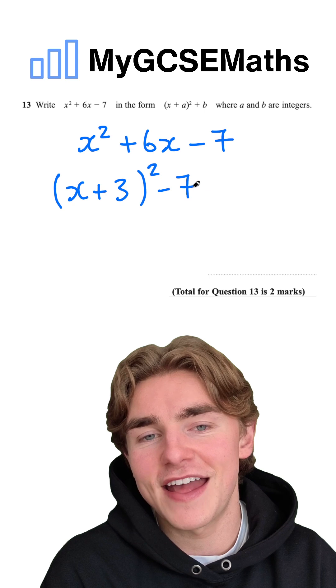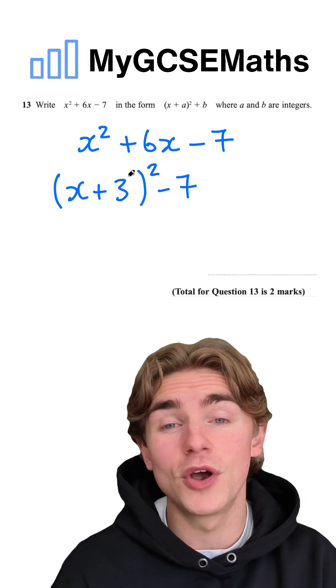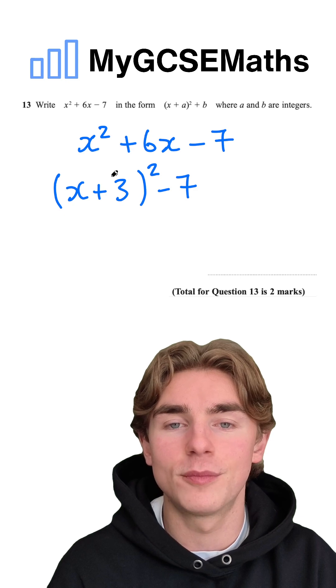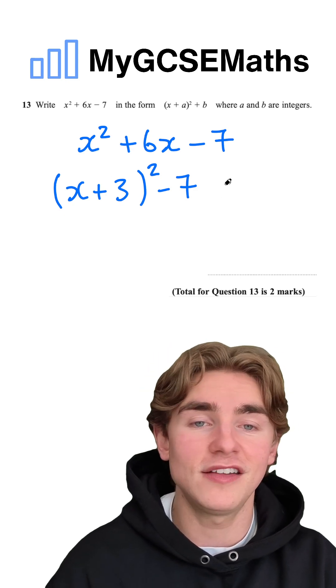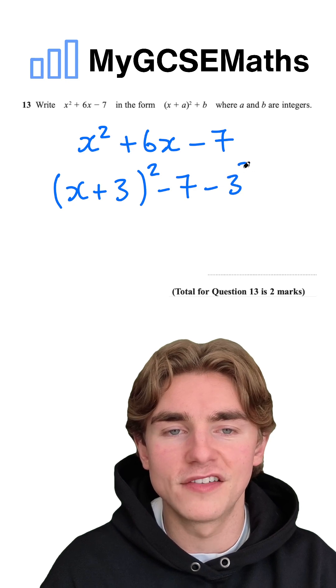We're going to copy down that minus 7 and then, crucially, we're going to subtract this number inside of the brackets squared. So we're going to minus 3 squared.